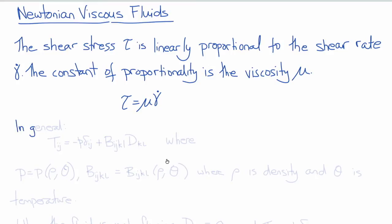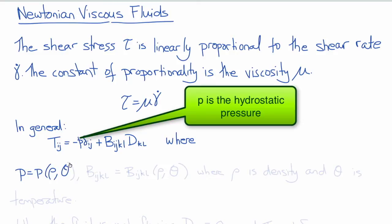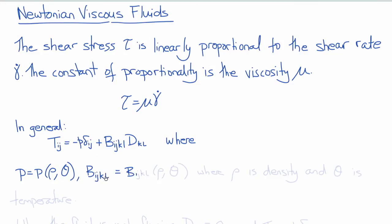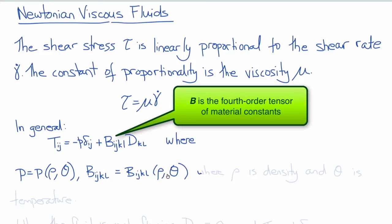But this equation isn't a constitutive equation, because a constitutive equation must give us all of the components of the stress tensor. So in general, a linear relationship between the shear stress T and the rate of deformation tensor D will look like this: Tij is equal to minus P delta_ij plus B_ijkl times D_kl, where P is the hydrostatic pressure, which is a function of density and temperature. And this fourth-order tensor B_ijkl, which can also be a function of density and temperature, is the fourth-order tensor of coefficients relating the stress to the rate of deformation.